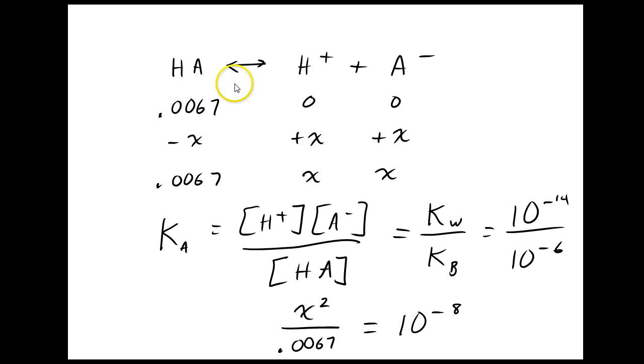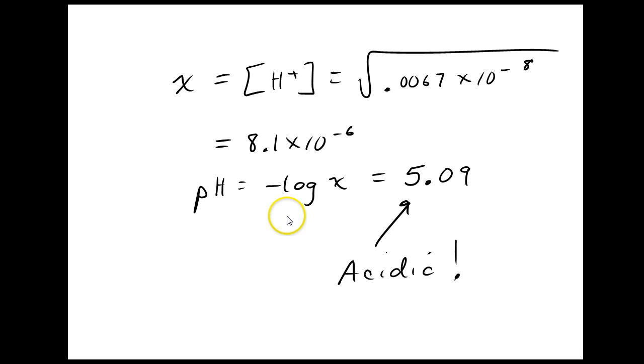So I'm going to start with my HA equation. I'm going to icebox it. I'm going to take my KA expression. Oh, I better solve for KA because I don't know it. There it is. 10 to the negative 8 of KW divided by KB. And I'm going to substitute X terms in for these chemicals. I'm going to solve for X. And then I can get the pH pretty easily. This is the equivalence point. And you can see it's acidic, not 7.